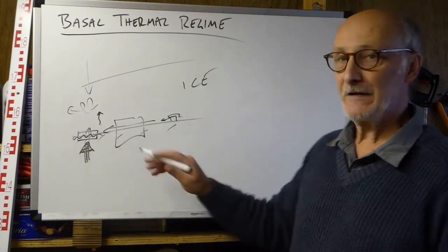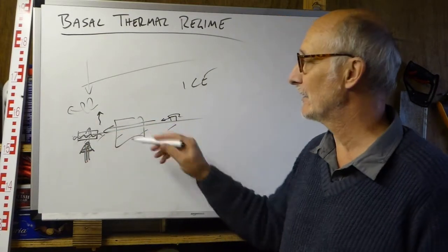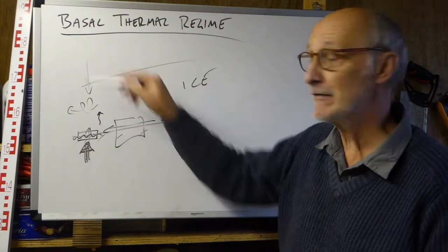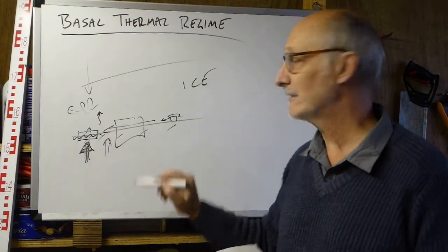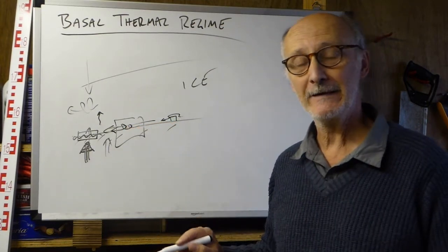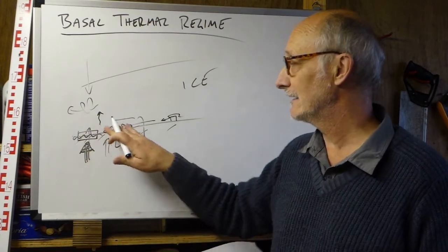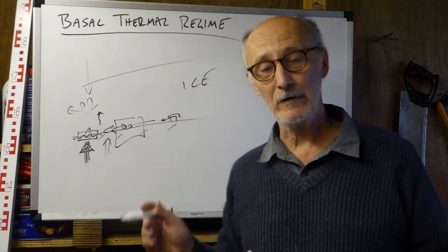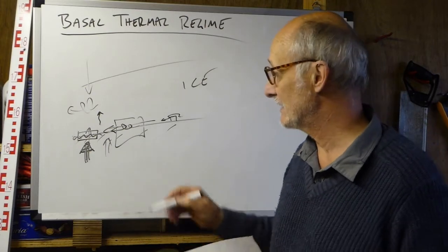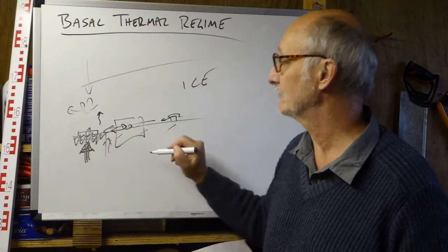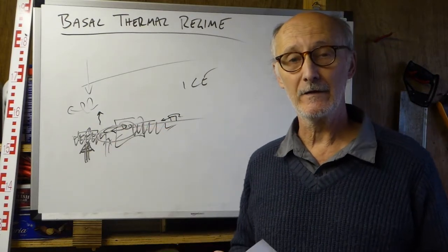Given that different things are going on at different locations of the bed — different processes, different thicknesses of ice, different abilities of the glacier to conduct heat away, different supply of heat to the bed — it's no surprise to discover that thermal conditions are different in different locations. Here's my key point: there is a geography of basal thermal regimes. There are warm zones, there are cold zones, and there are transition zones between the warm and the cold.